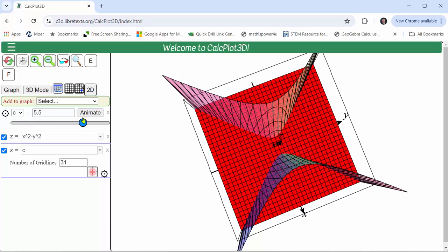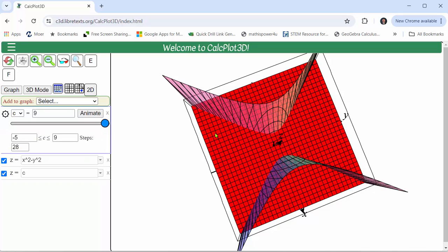If we stop at z equals nine when c is nine, this intersection is a level curve we want to sketch.